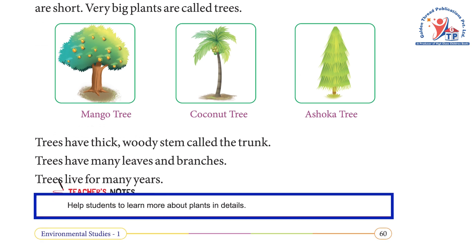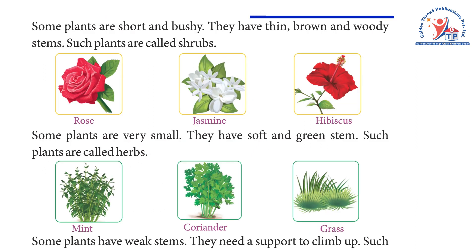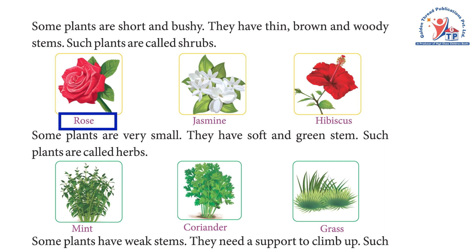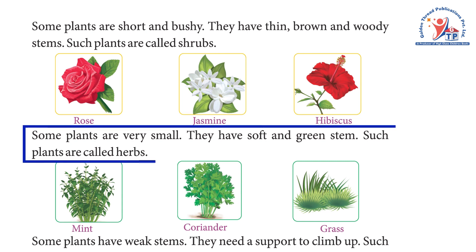Some plants are short and bushy. They have thin, brown and woody stems. Such plants are called shrubs. Examples of shrubs are rose, jasmine, and hibiscus.